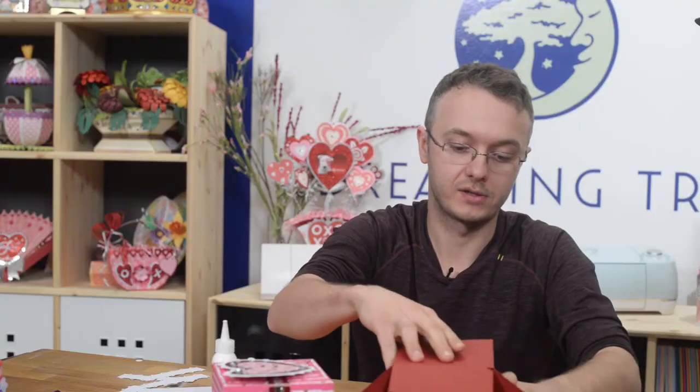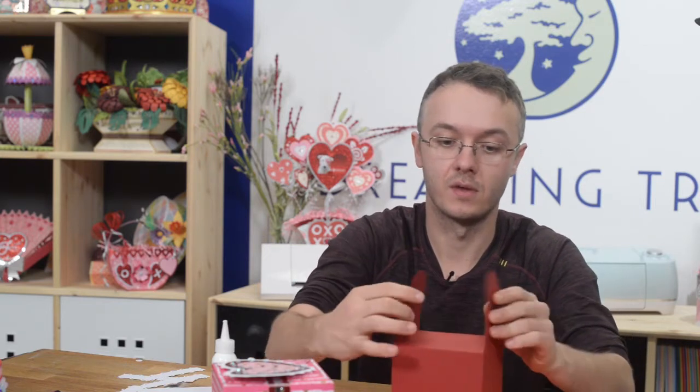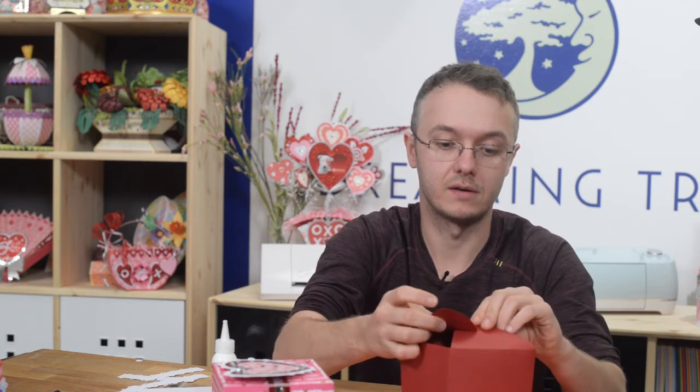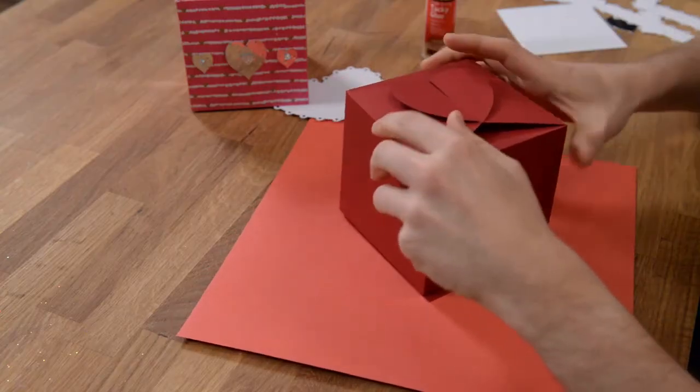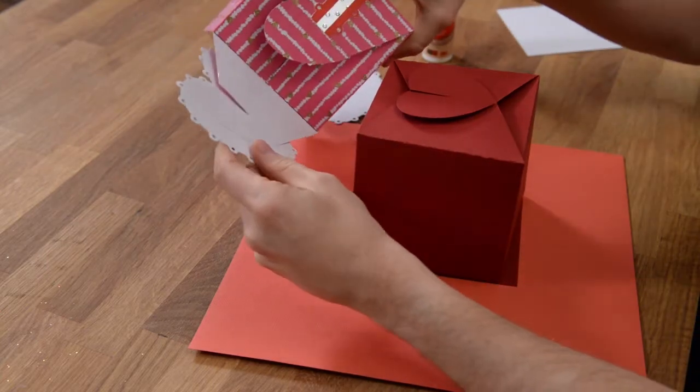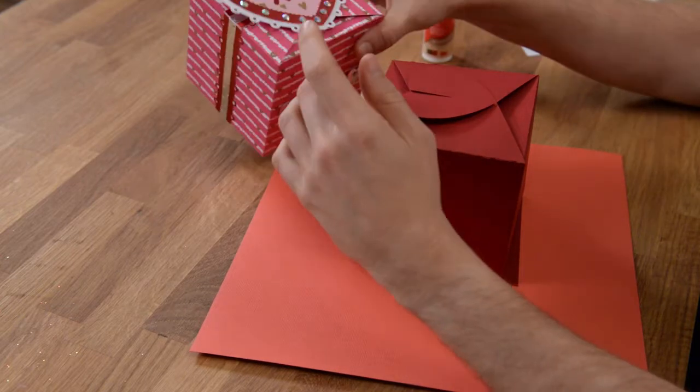So grab your box and pretend like it's put together at the bottom. Fold these in, and then you see how these lock like this. The heart is going to be glued to the flap on the left hand side.